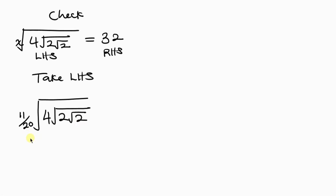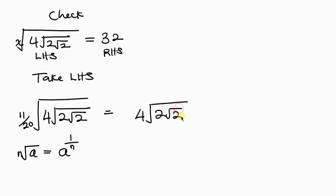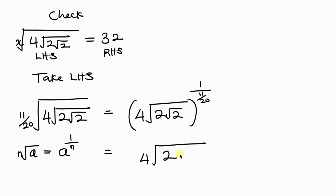With x equal to 11 over 20, we have the (11/20)-th root of 4 times the square root of 2 times the square root of 2. Applying the property of indices — the n-th root of a equals a to the 1 over n — this becomes 4 times root 2 times root 2, raised to 1 over (11/20), which is the same as raised to 20 over 11.